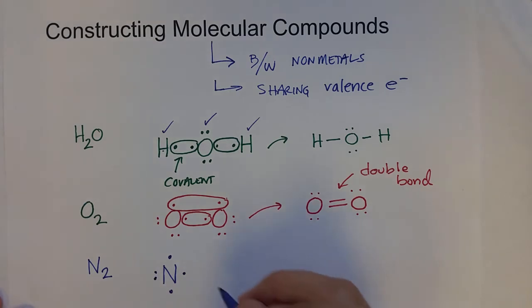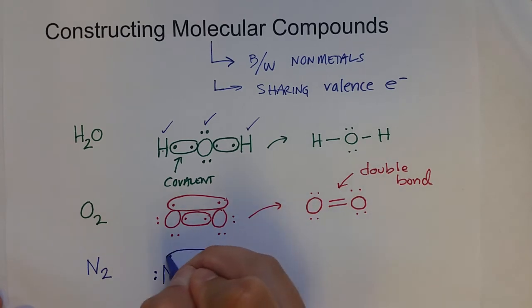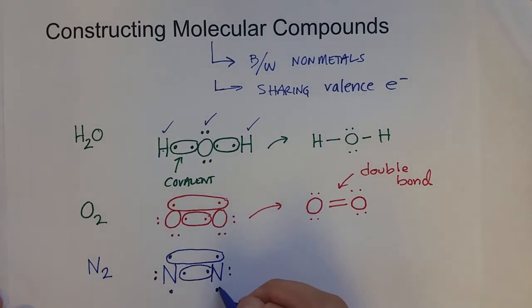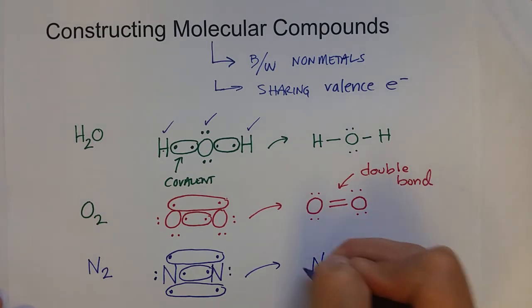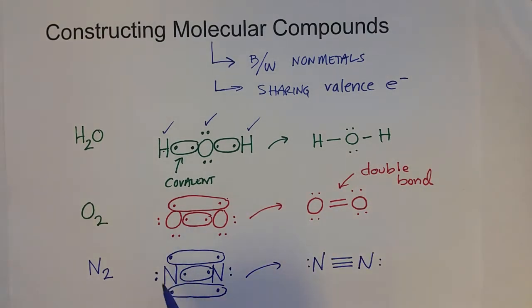What it does to get to the octet rule is it will share not one pair of electrons like water or two pairs of electrons like oxygen. It will actually share three pairs of valence electrons with another nitrogen atom so that it can get the octet rule.